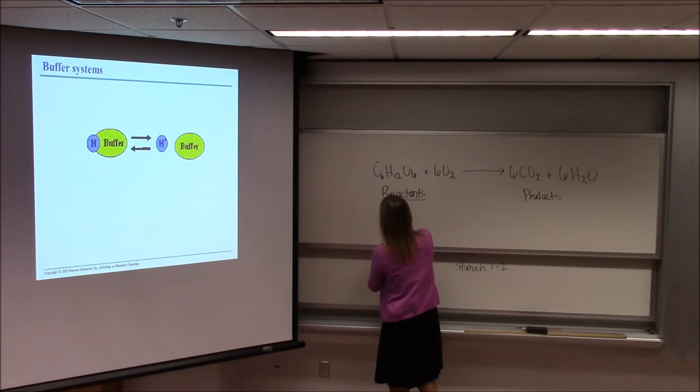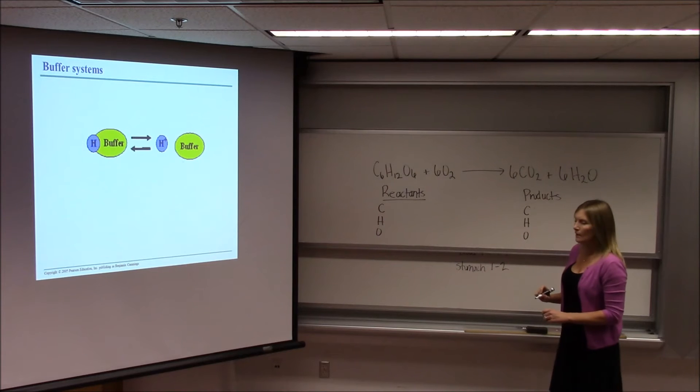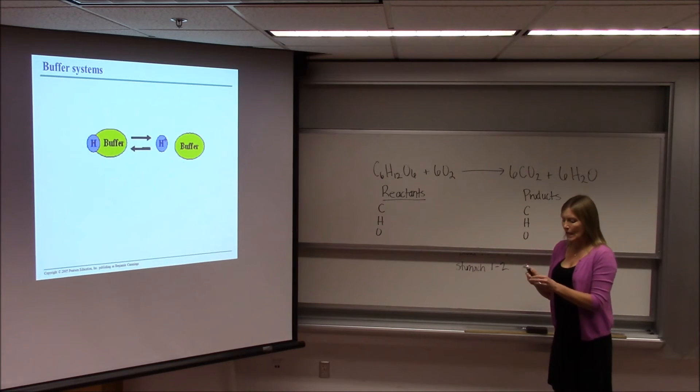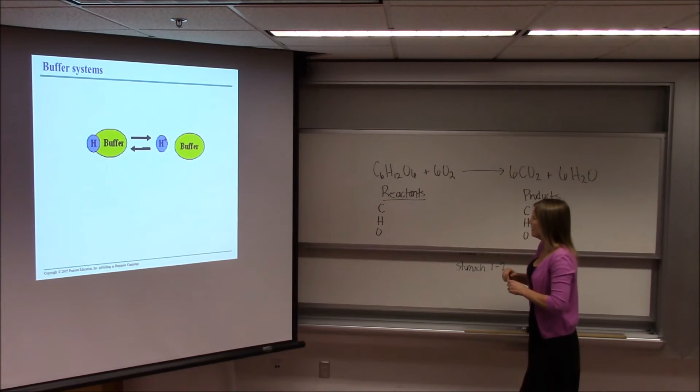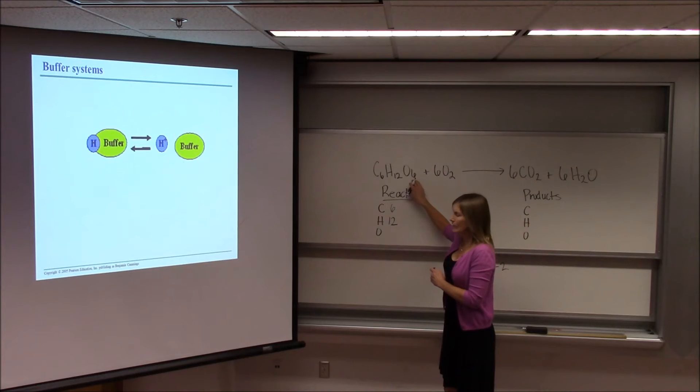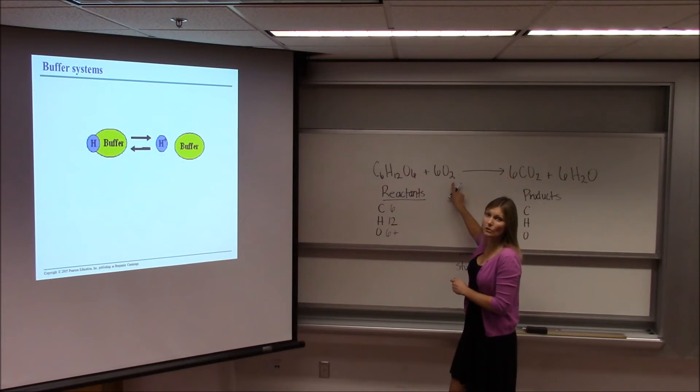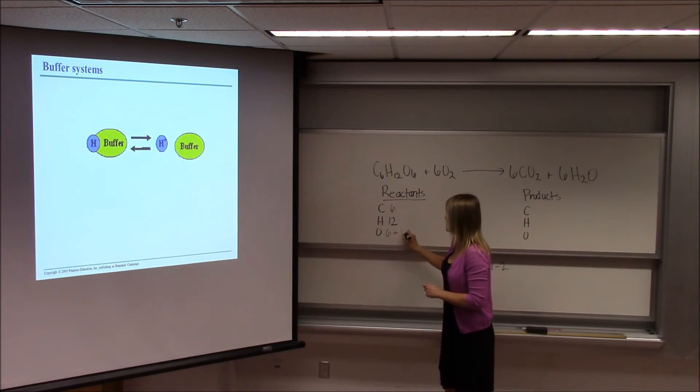So let's look at this. Carbon, hydrogen, and oxygen on the left side of the arrow. Carbon, hydrogen, and oxygen on the right side. This is good practice in counting the numbers of atoms we have on each side of the arrow. So I have six carbons, I have 12 hydrogens, and I have six oxygens. And then here I have six times two, which is 12 oxygens, so 18 total.